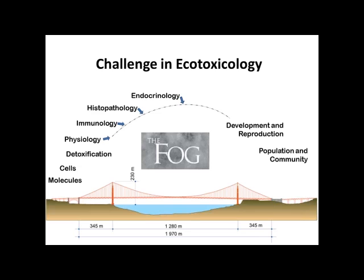For example, the pesticide bifenthrin has estrogen-mimicking properties. If you expose fish to bifenthrin at a certain concentration, you will actually see feminization — the chemical mimics that response. With endocrinology, we can measure and are fairly certain that will have an impact at the developmental level. It's not bifenthrin itself that causes this, but a byproduct — hydroxybifenthrin — resulting from the metabolism of bifenthrin, that actually causes the feminization of male fish.